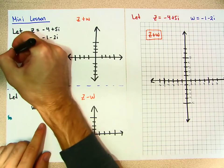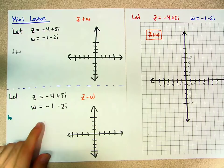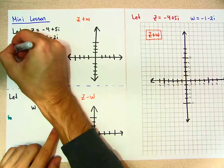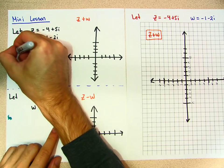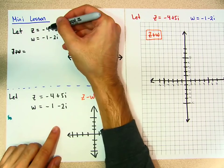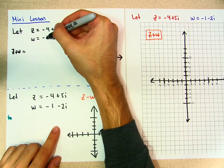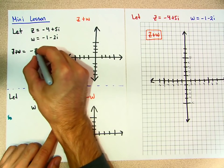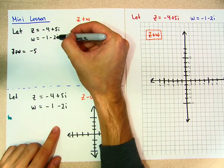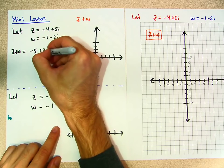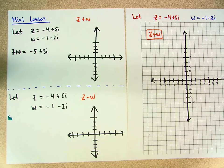Well, what do you do? z plus w — can we see that? Let me use a different Sharpie. If I say z plus w is equal to what? This negative 4 plus negative 1 is negative 5, and 5i plus negative 2i is 3i, right? So then what do you do?